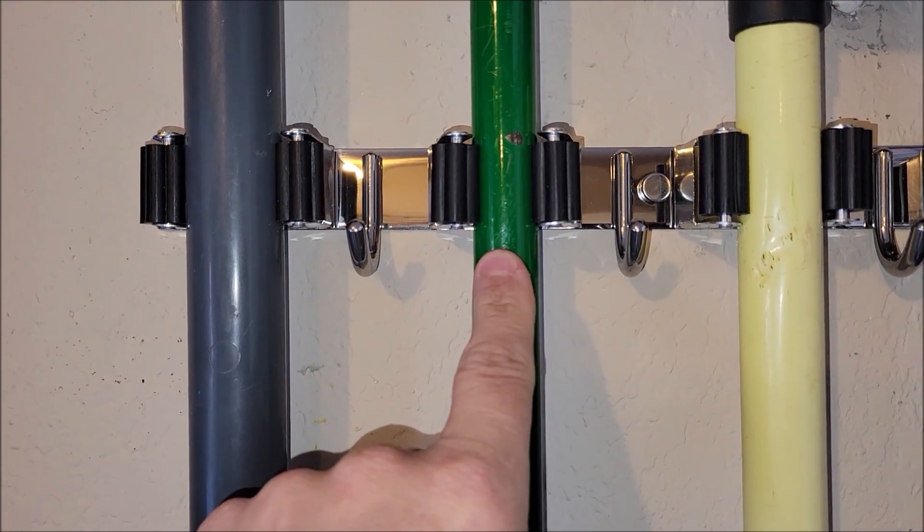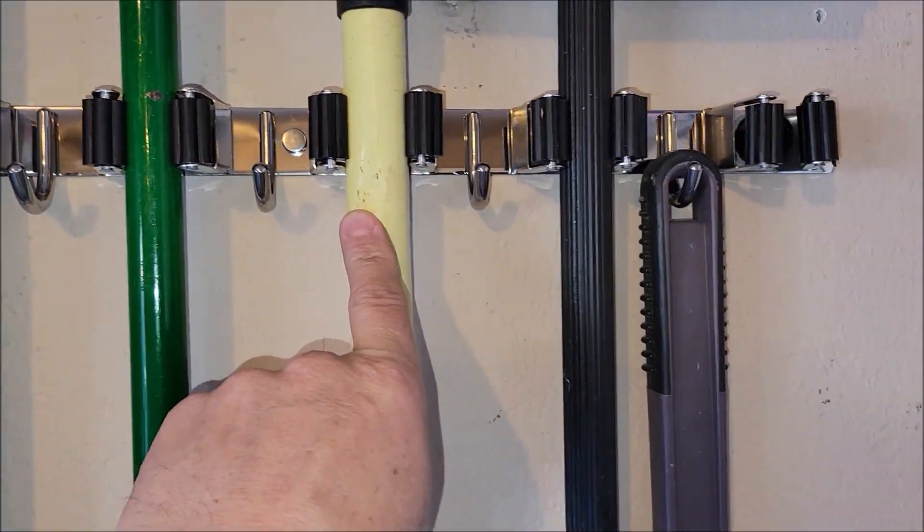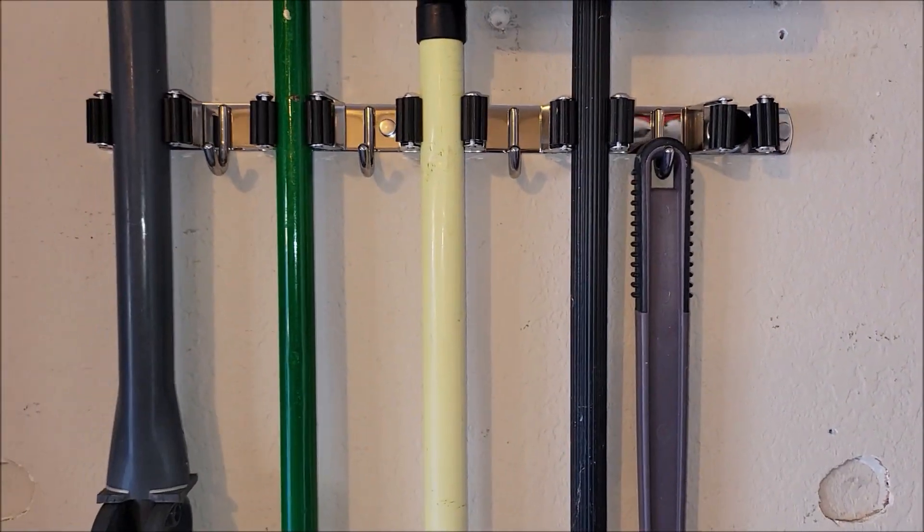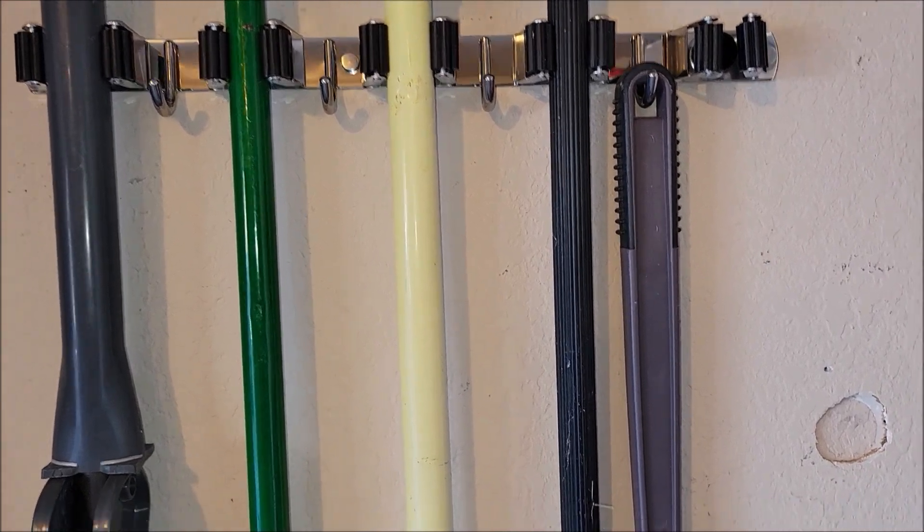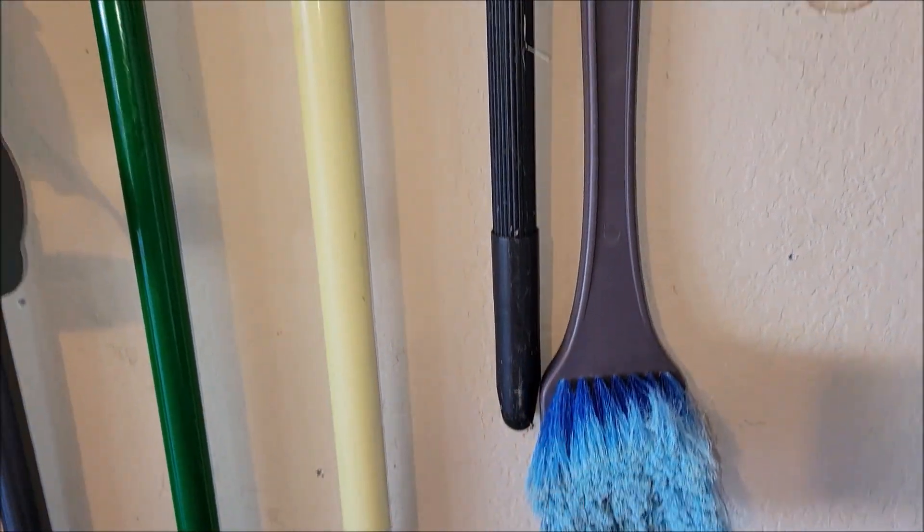This is the handle to our broom. This is an extension. It's a dustpan. Anyways, it's got the little hooks there too to hang things like this. This is a brush we use to wash the vehicles.